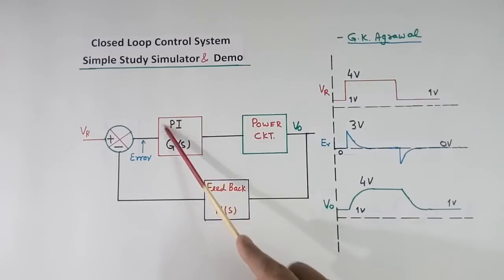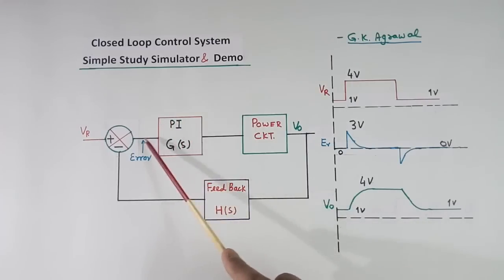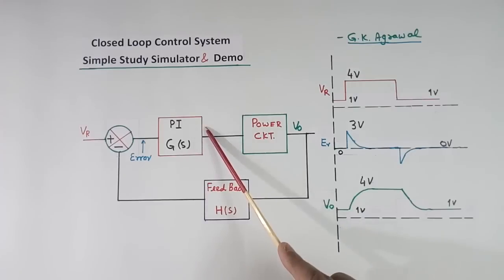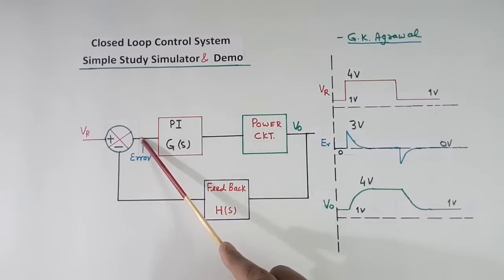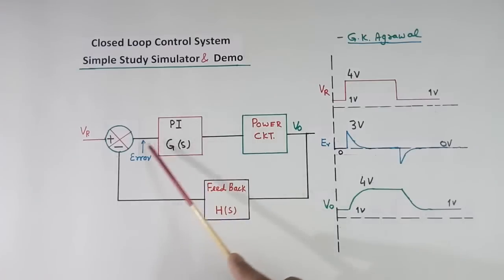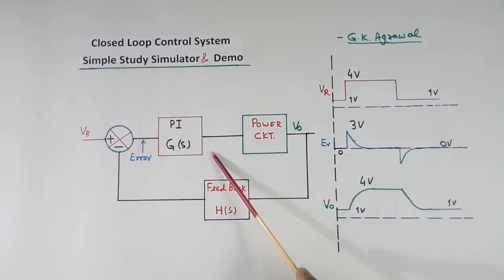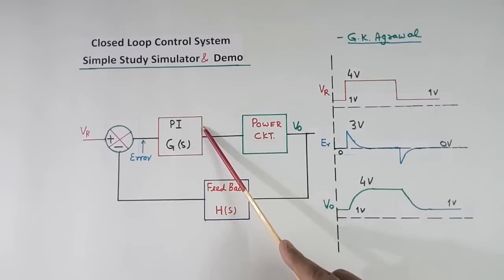The PI controller quality is such that when error is zero, it will not change. If error is positive, it will increase. When error is negative, it will decrease. But when error is zero, it will not be zero — it will retain the old value.